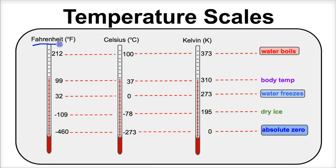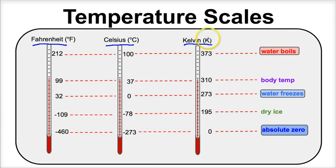We've got the Fahrenheit scale, or degrees Fahrenheit. We have the Celsius scale, or degrees Celsius. And last but not least, we have the Kelvin scale, or just Kelvin, or K for short.